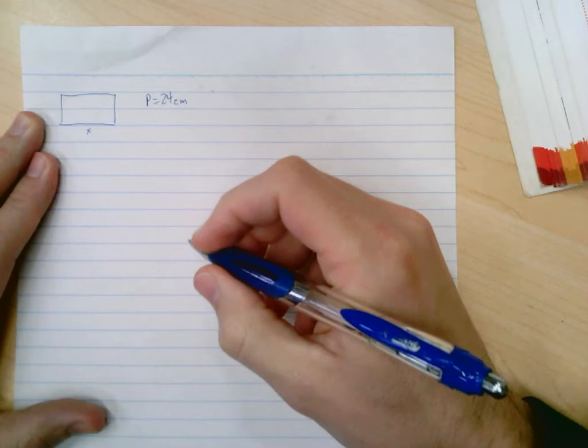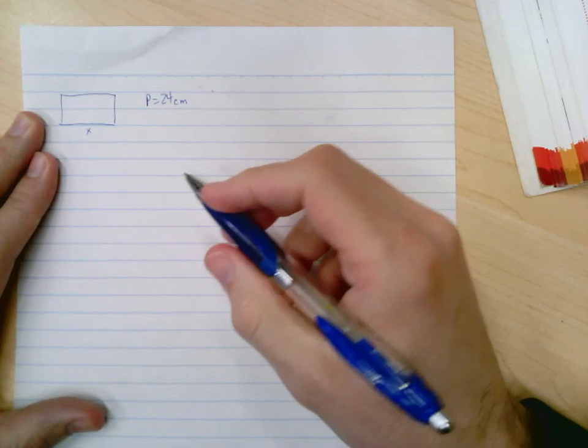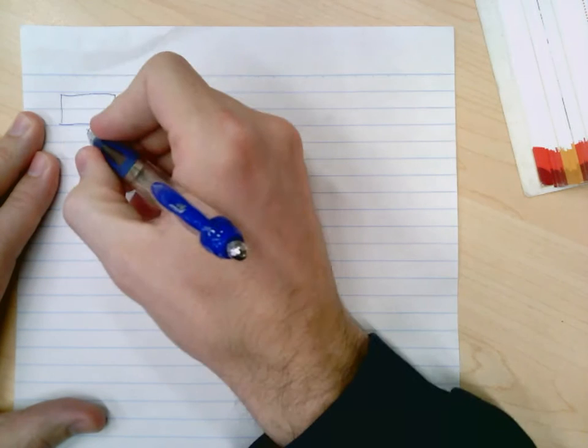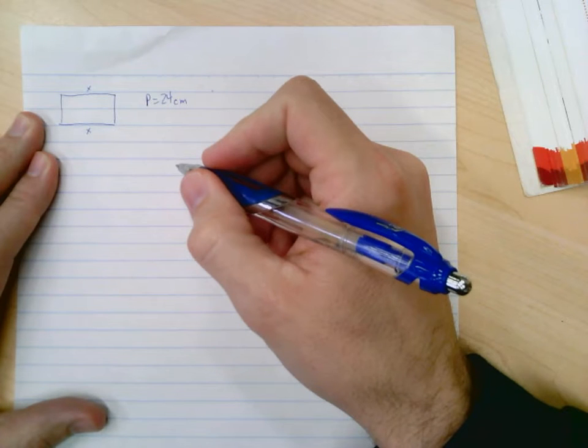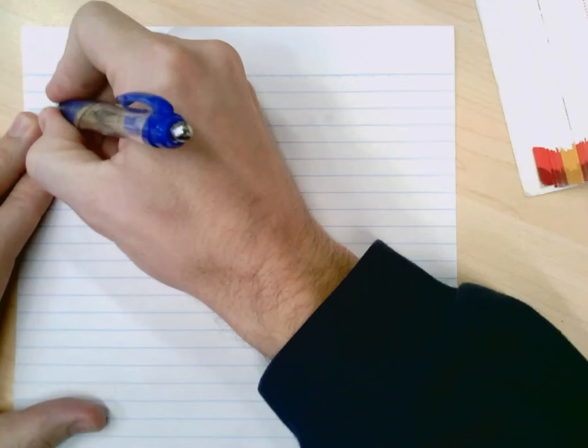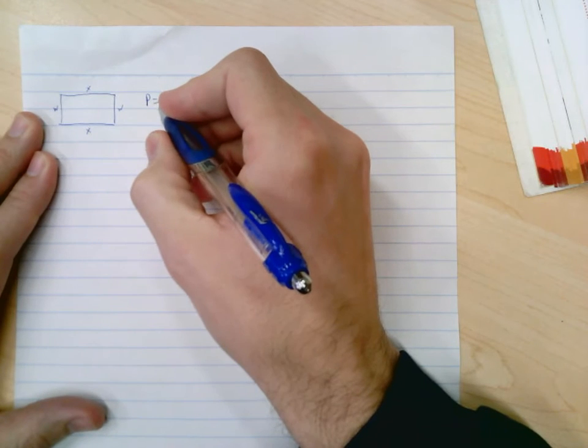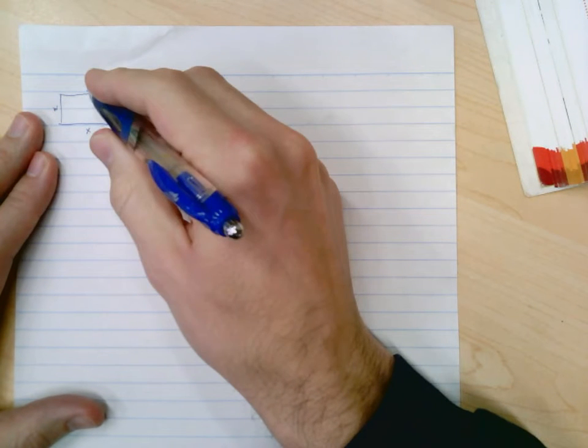Okay, so the first thing that it says is find the width of the rectangle in terms of the length. Alright, well we've got that the length is x, which means the other length must also be x. And then we have the width, which is this side right here. So perimeter of course is when you add up all the sides.